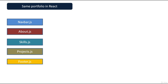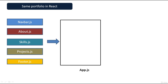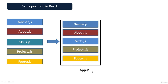After creating all these components, we have to create one more component to place all of them in one place — that is the app.js component. Here you can see this is the app.js component. In this app.js component we place all the child components. App.js is the parent component in ReactJS. In it we place navbar.js, about.js, skills.js, projects.js, and footer.js.